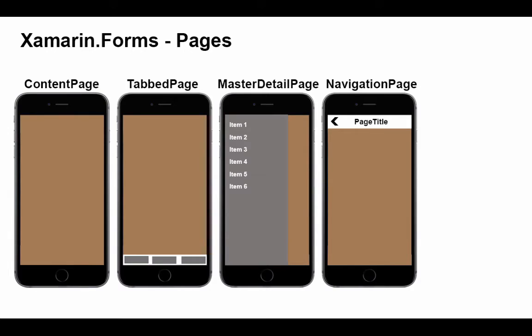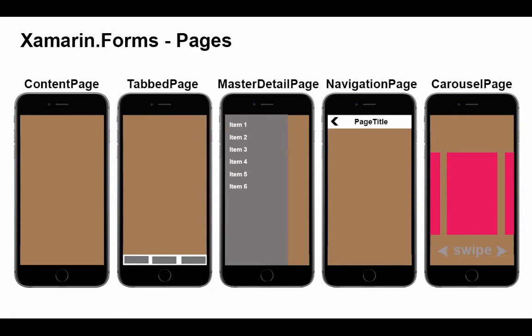Then we have a navigation page. The navigation page provides a navigational control of a stack of pages. It has a bar at the top with the page title and a previous button to be able to backtrack through the pages that have been navigated through. The carousel page allows you to present items one at a time in a carousel or circular Rolodex format that the user can swipe to go forward or backwards.